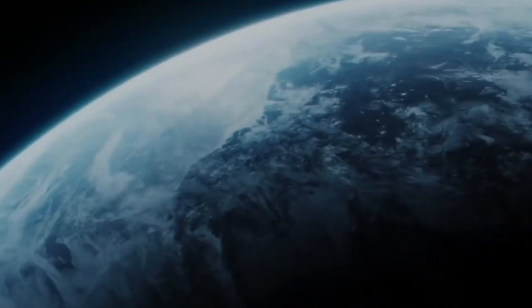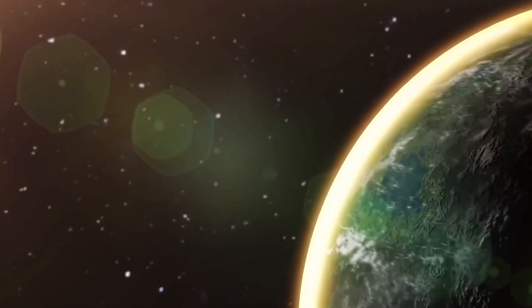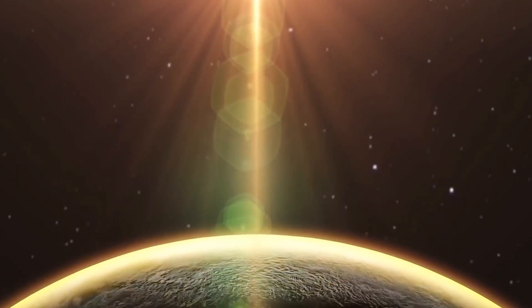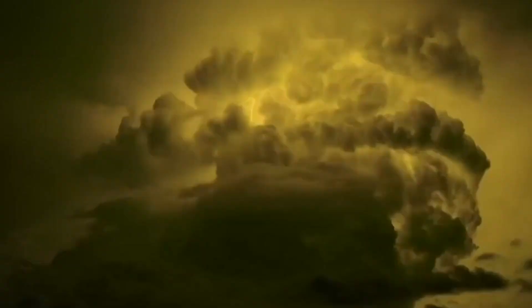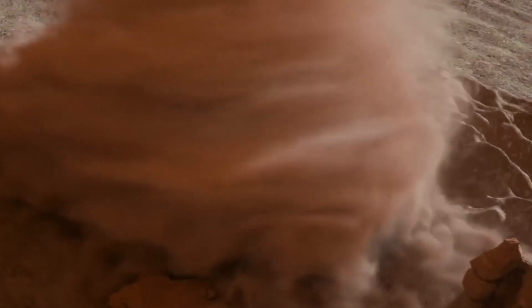Given that Proxima b is located in the habitable zone of the star, some scientists believe that there might be a presence of aliens on the exoplanet, while other scientists negate the existence of alien life.